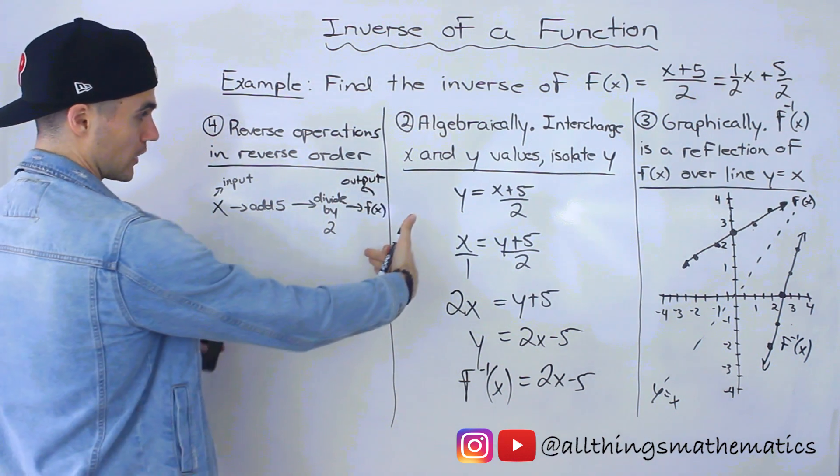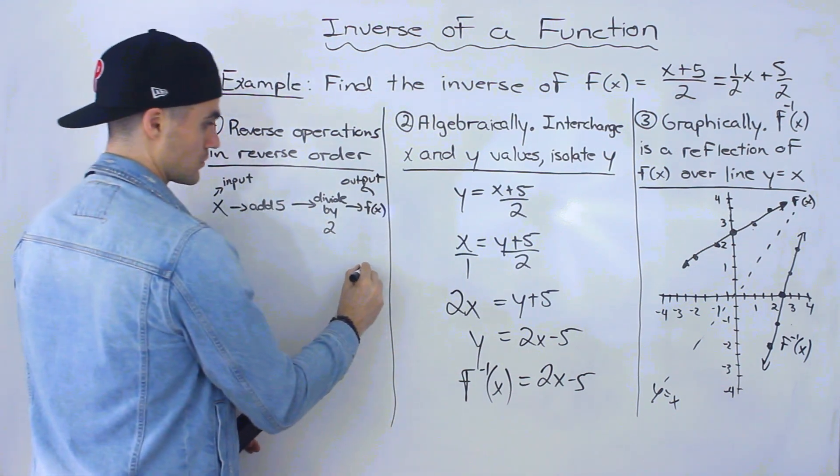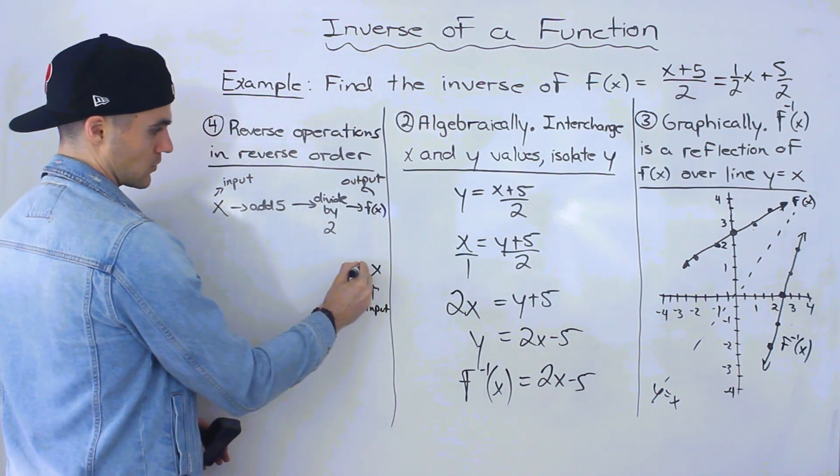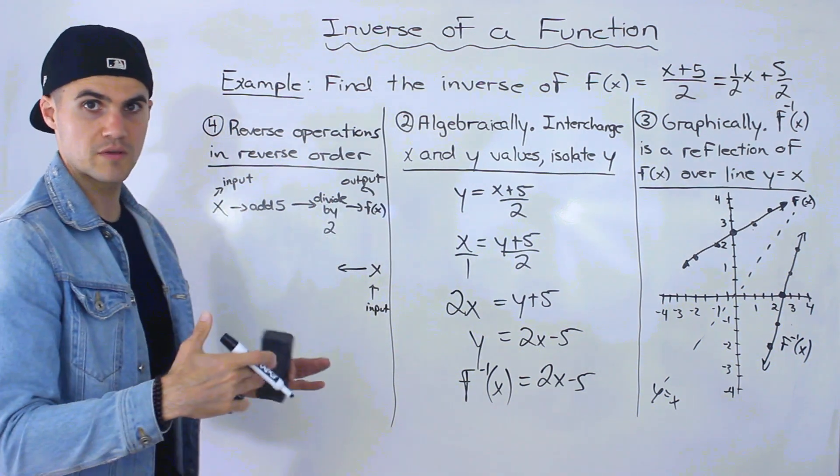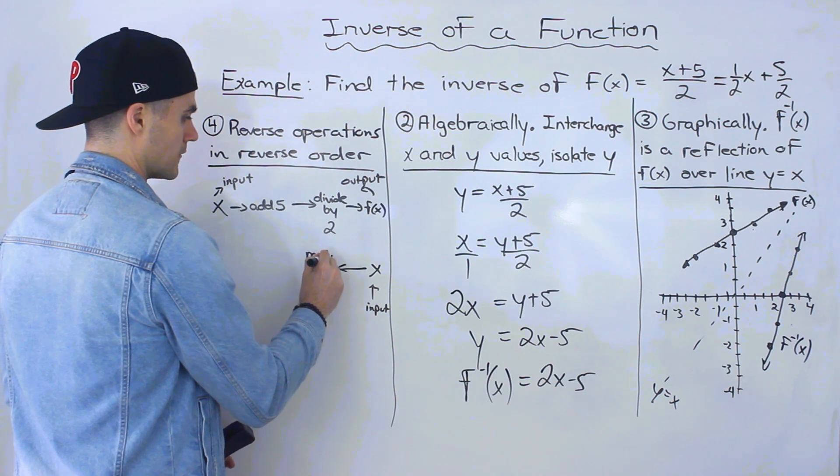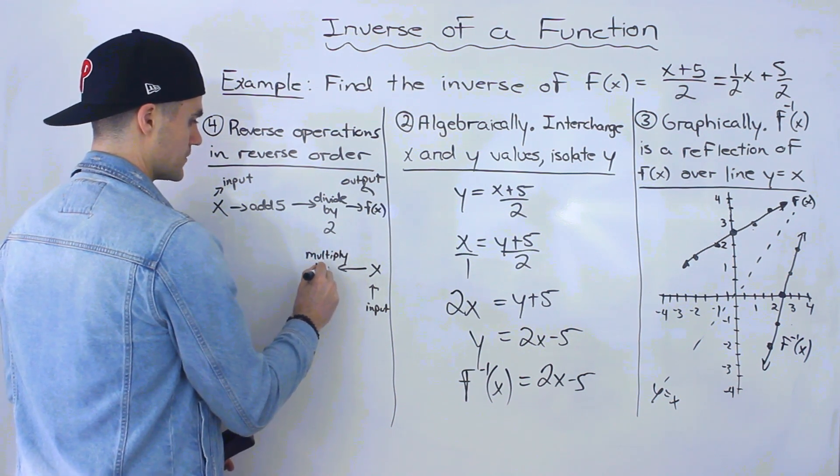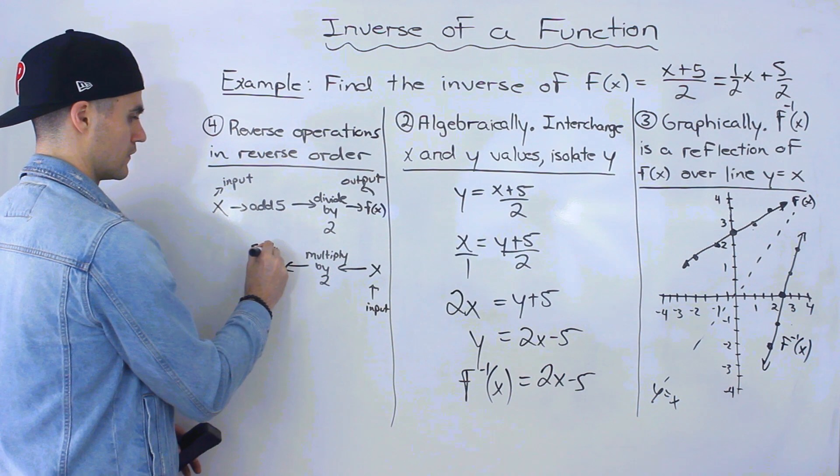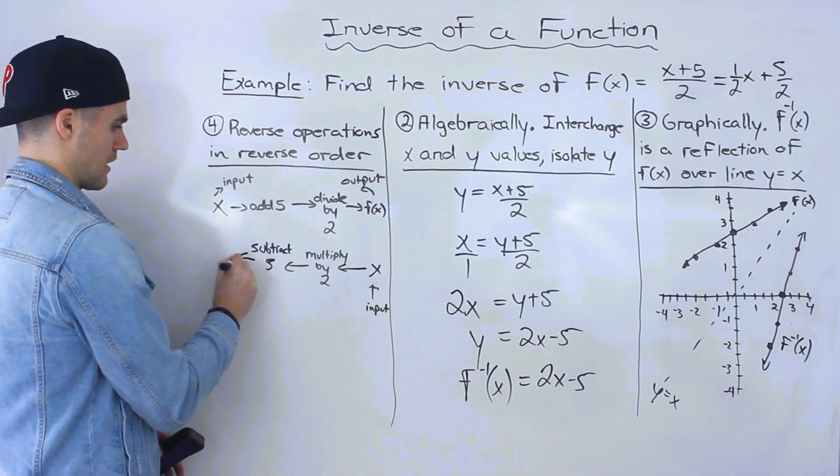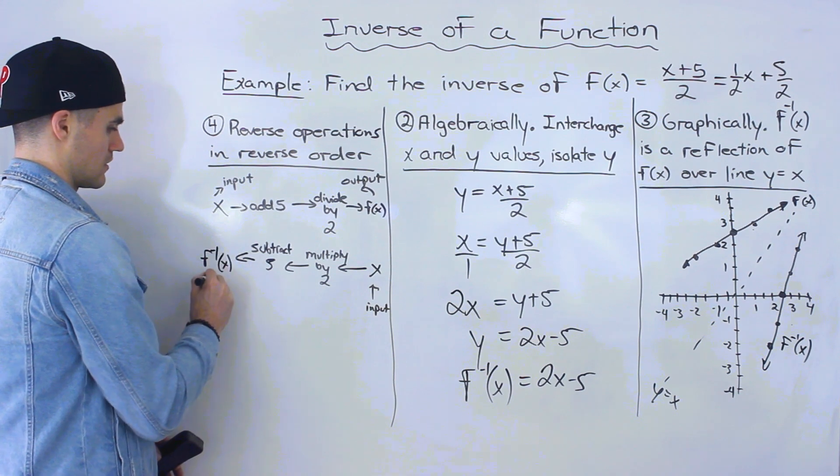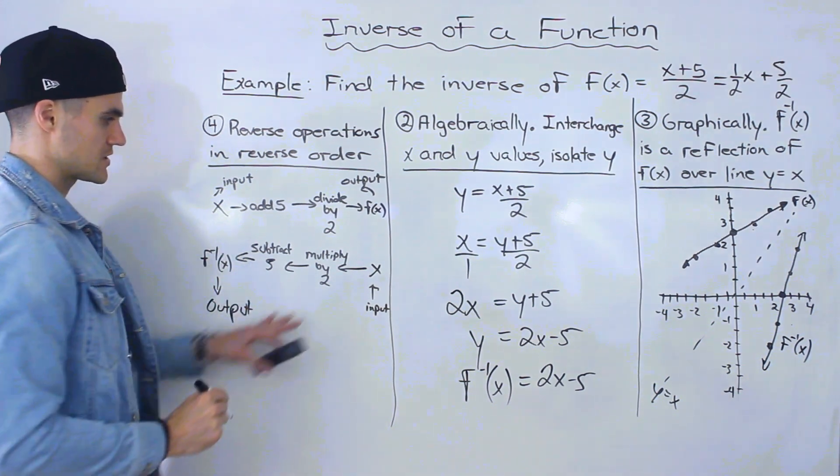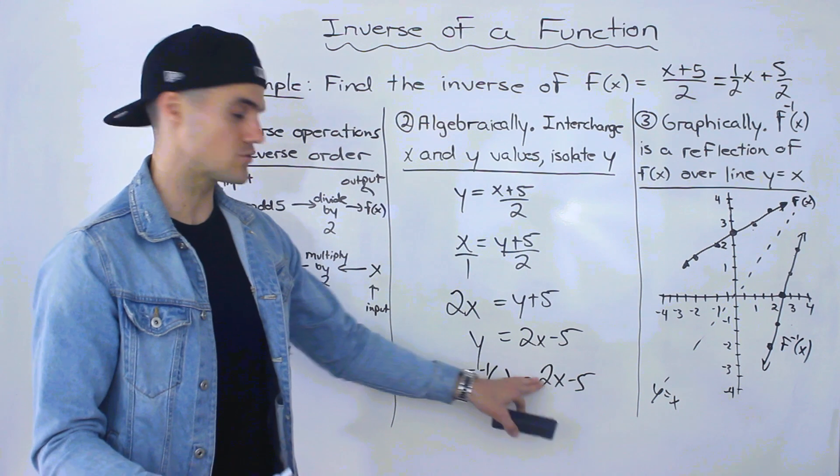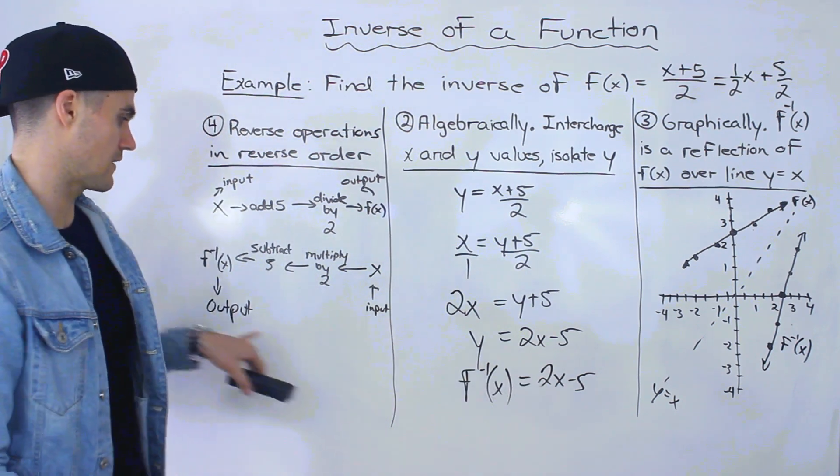And remember for the inverse, we got to go in reverse order and we have to reverse the operation. So we would start with our x value here, our input. And we're going in this order now. So instead of dividing by 2, what would be the opposite of that? It would be multiplying by 2. And then next, adding 5, the opposite, the reverse of that, is subtract 5. And then we'd end up with our inverse. This would be our output. And notice that this here corresponds to what we got. We have our x value, we multiply by 2, and then we subtract 5. And then we end up with our inverse.